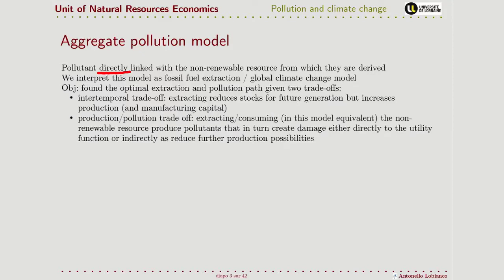The second trade-off concerns the fact that production is linked with pollution. The idea is that extracting or consuming the non-renewable resource generates pollution, this pollution accumulates, and the stock of pollution damages society. This can happen in two ways: the first is a direct damage to utility — for example, the landscape of oil fields may directly affect people's well-being — and the second is a more indirect way, by reducing production possibilities.